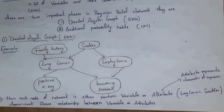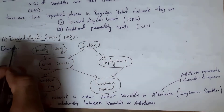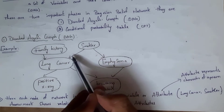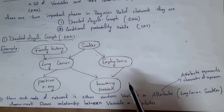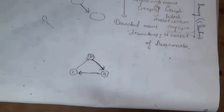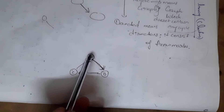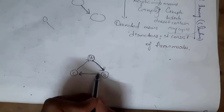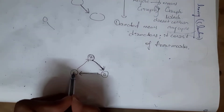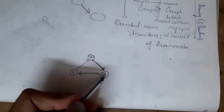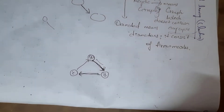A directed graph is a graph which contains directions — that is, arrow marks. Acyclic means a graph which does not contain any cycle. For example, a cyclic graph has three nodes: Node A, Node B, and Node C. Node A is directed to Node B, Node B to Node C, and Node C back to Node A, repeating again and again with no end — that is a cyclic graph.